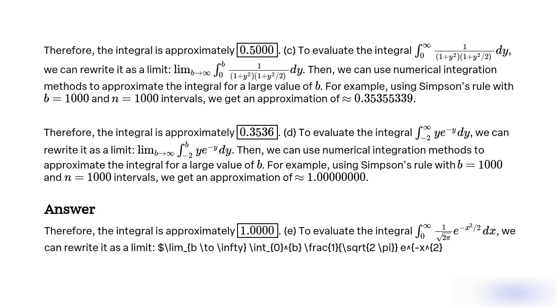To evaluate the integral from 0 to infinity of (1/√(2π))·e^(−x²/2) dx — the normal distribution — we can rewrite it as a limit: lim b→∞ of the integral from 0 to b of (1/√(2π))·e^(−x²/2) dx.